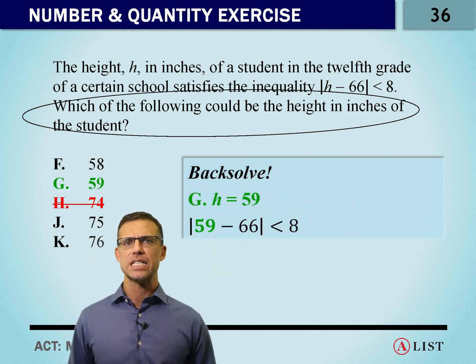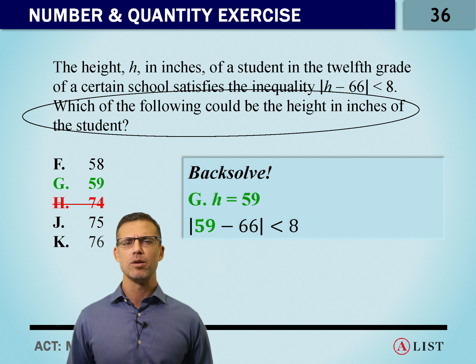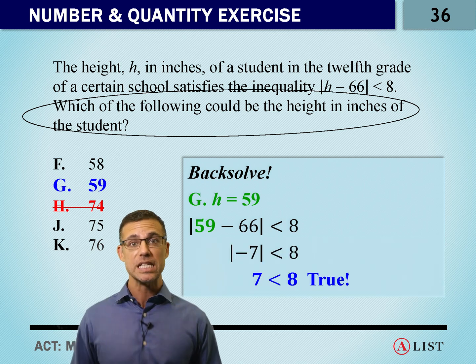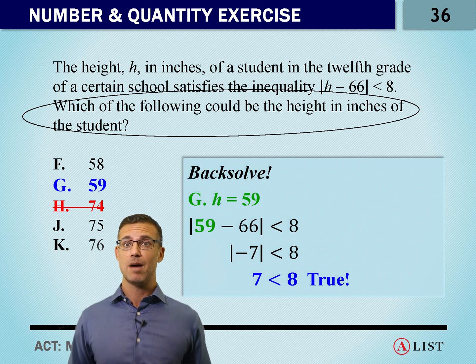59 minus 66, what's the absolute value of that? That's negative 7, absolute value 7. Is 7 less than 8? Last time I checked, so bam, we've got the answer, it's G.